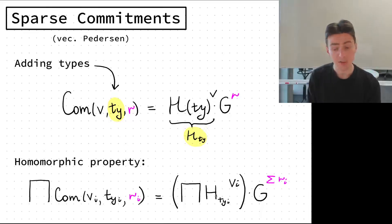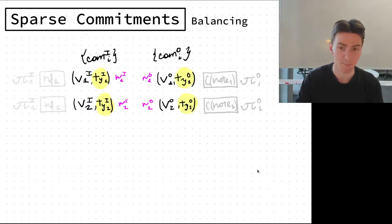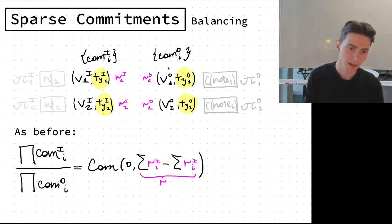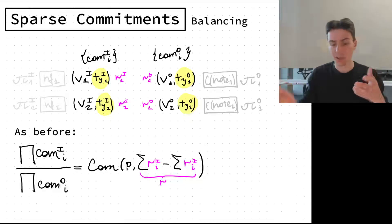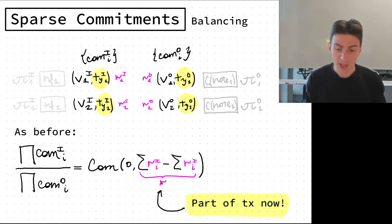Balancing with this vector Pedersen commitment scheme is easy as it was before. You have still these values but now all types and the commitments to typed values. As before we just take a product of all the inputs and divide by the product of all the outputs and we get a commitment to zero, it's a vector so a vector of zero for different types. The difference is that the r is now part of the transaction and then we just open it.